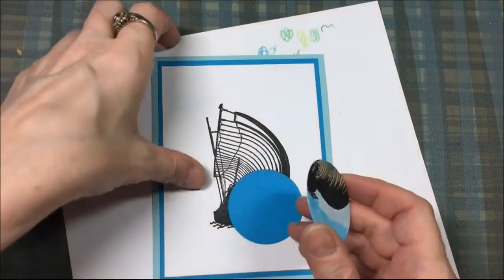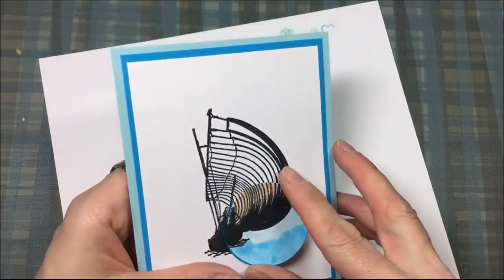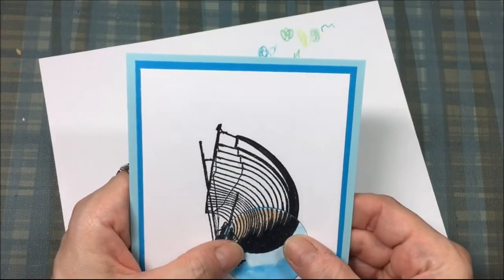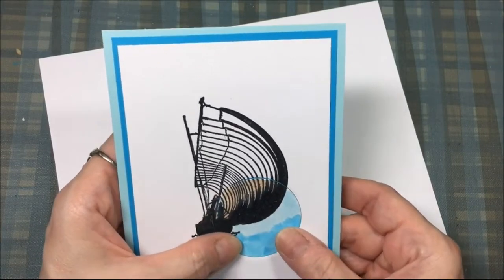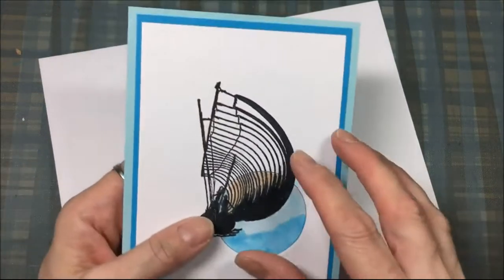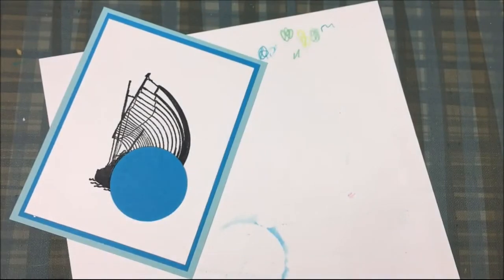And now I'm going to carefully glue that circle and I need to glue it back in the exact same spot where it was cut out and I don't like to use wet adhesive for this because you don't want it to ooze around the edges.